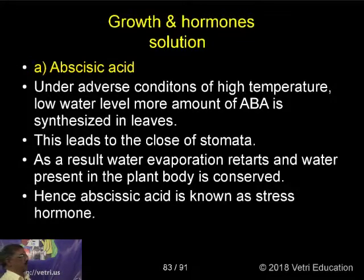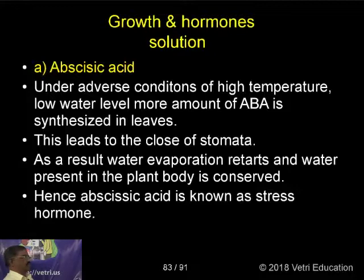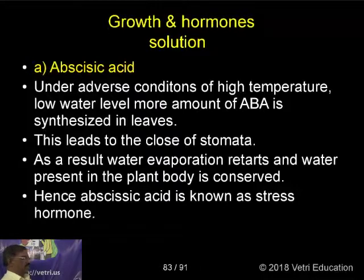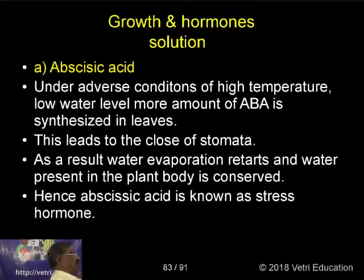Under adverse conditions of high temperature and low water level, a greater amount of ABA or abscisic acid is synthesized in leaves. This leads to the closure of stomata. As a result, water evaporation is reduced and water present in the plant body is conserved. Hence, abscisic acid is known as the stress hormone.